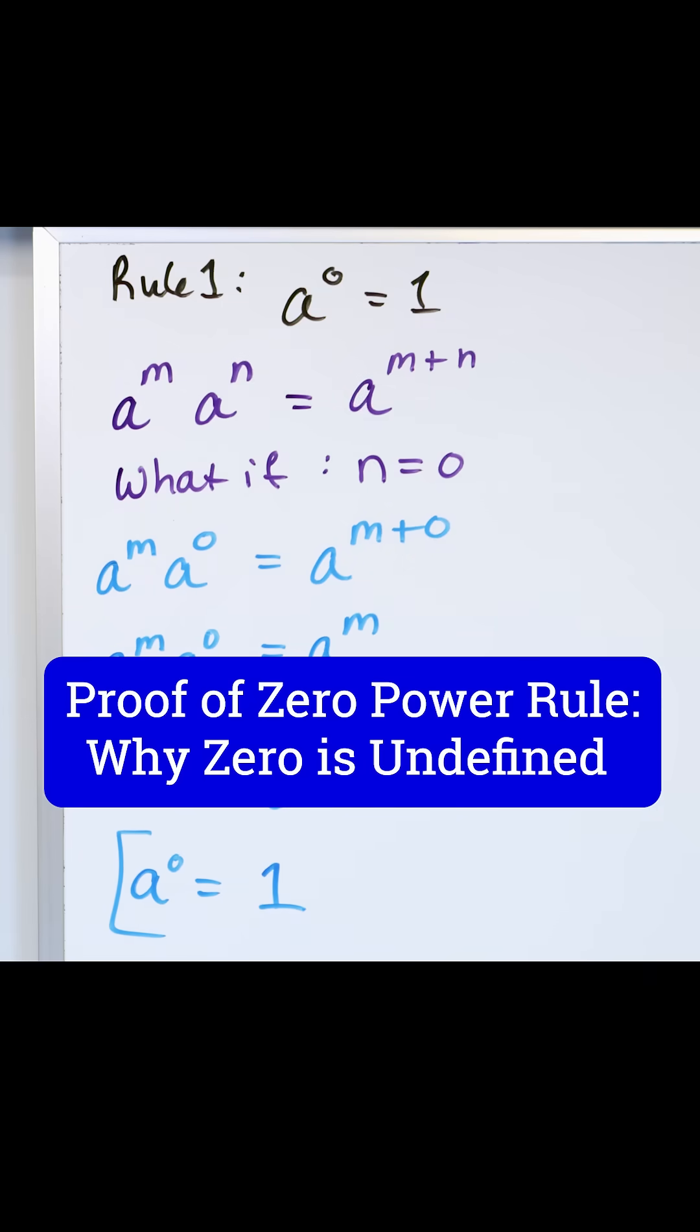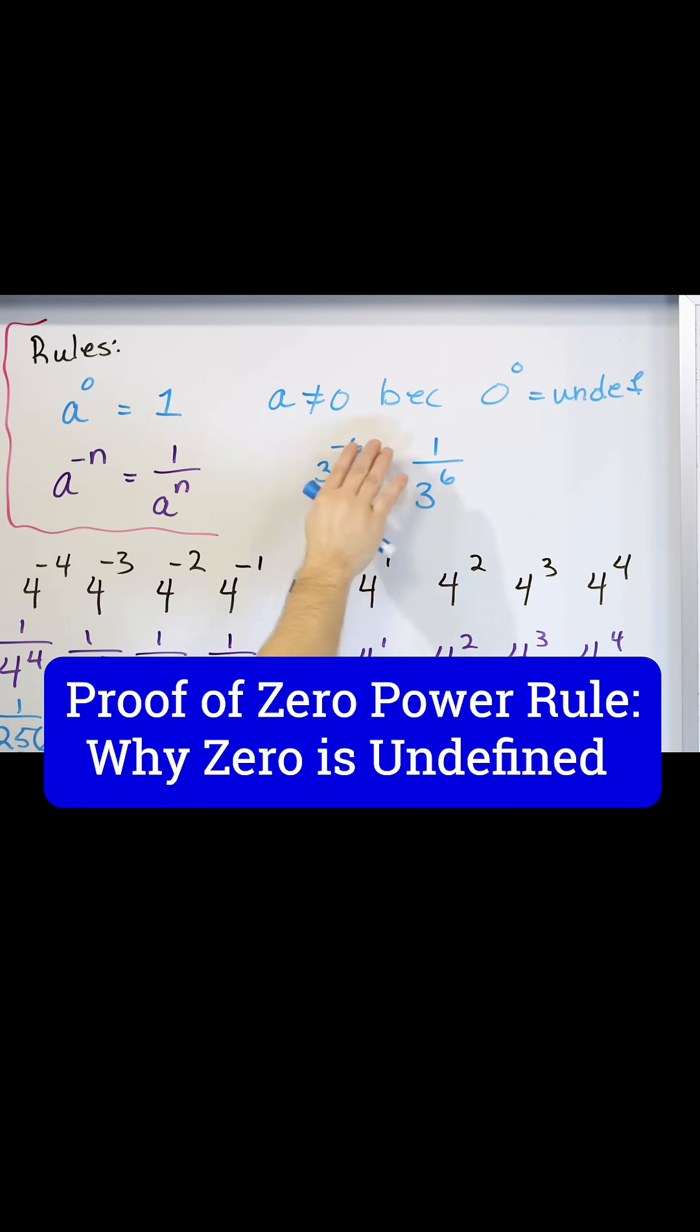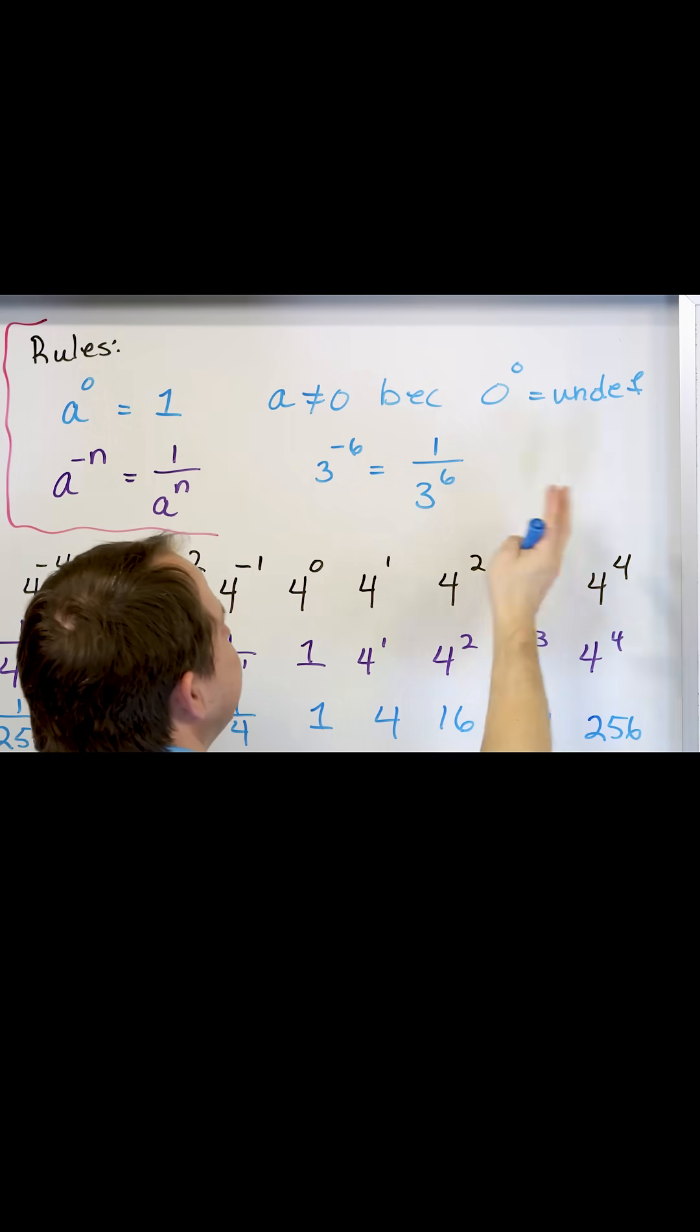Now, if you go back to the original rule that we had, we said that this was true, but only if a was not zero. We said that zero to the zero is undefined. It doesn't exist.